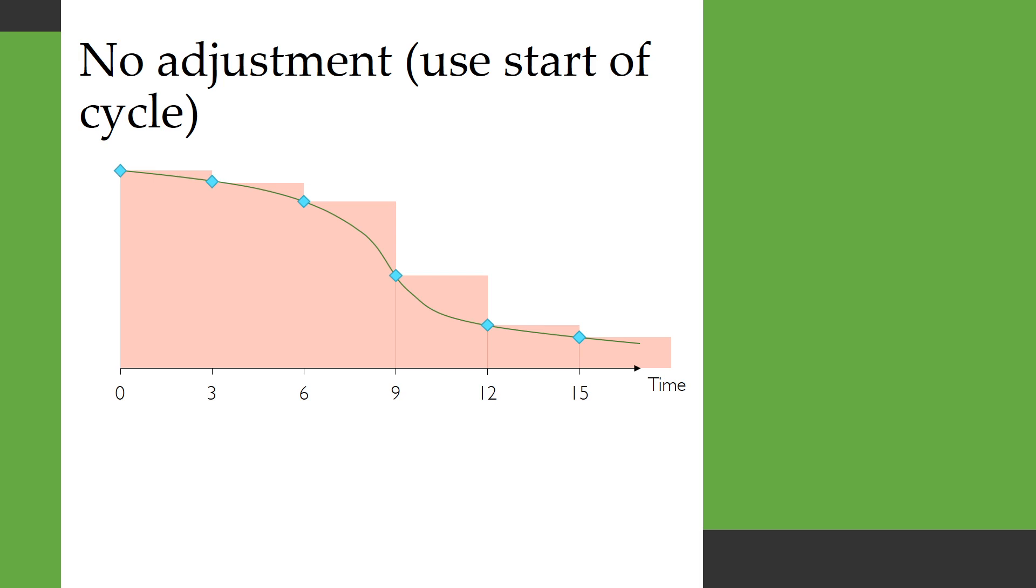So if you don't make any adjustment and you just take the membership at the start of the cycle and you multiply it by the cycle length, then you'll get something that looks like this and you'll see that we are repeatedly overestimating how much time is being accrued, particularly if you look here and here, big overestimations.